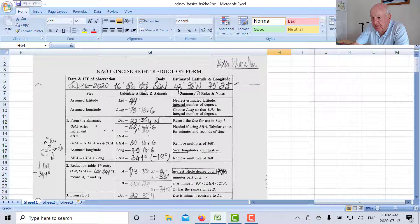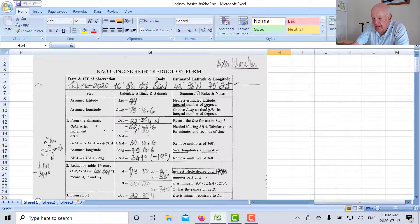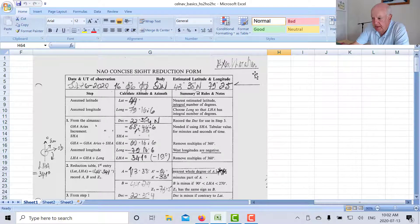Now what they do is they say look, we're only going to put in values for integral values of latitude. So what's the closest whole number of latitude degrees? So 44 is the closest there. And then what they ask you to do is they ask you to pick a longitude such that the local hour angle...